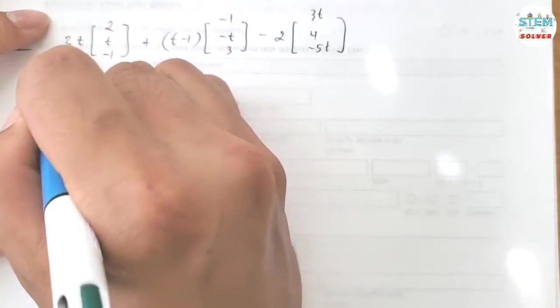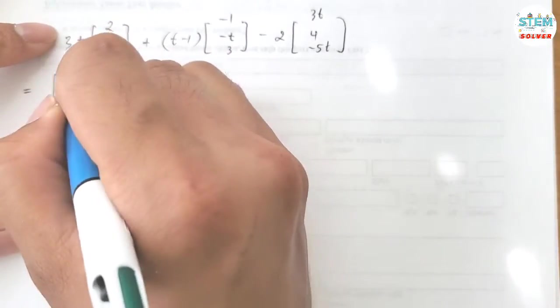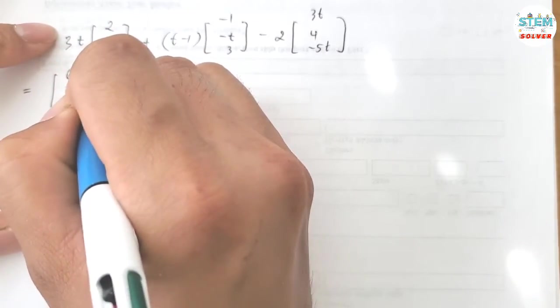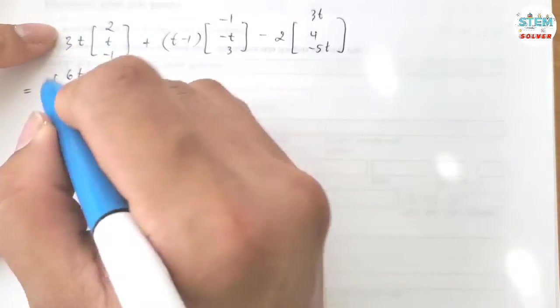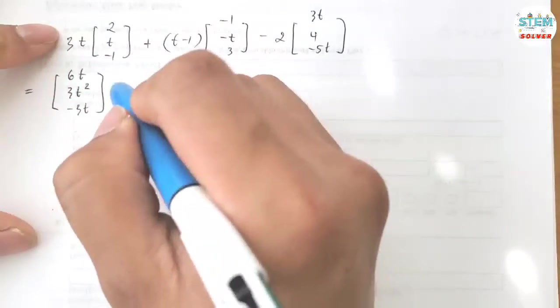For this one I have 3t times 2 which is 6t, 3t times 3 is 3t squared, and 3t times negative 1 is negative 3t.